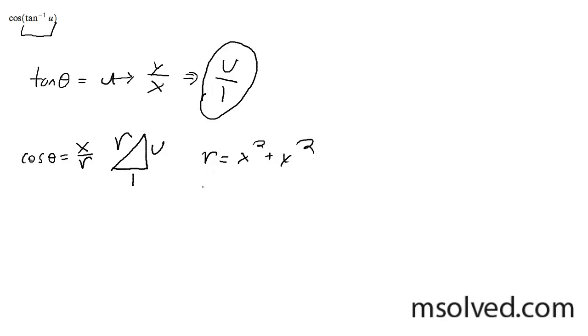And we can simply substitute in here. So r is going to be equal to, in this case, x is equal to 1 squared plus y is going to be u squared. This should be squared here.